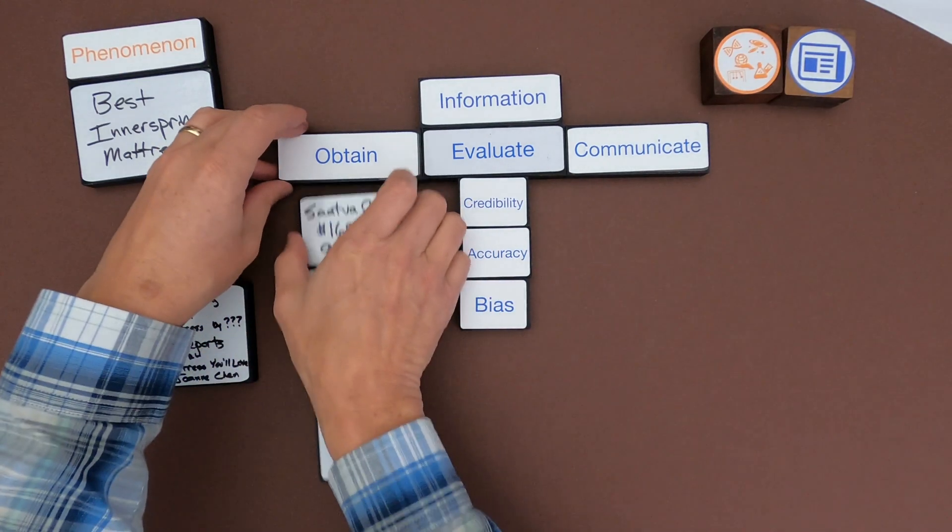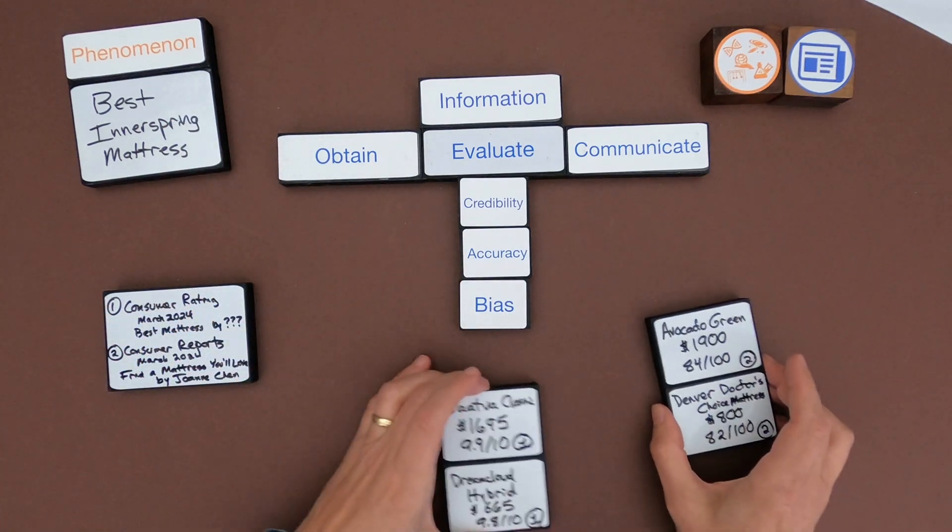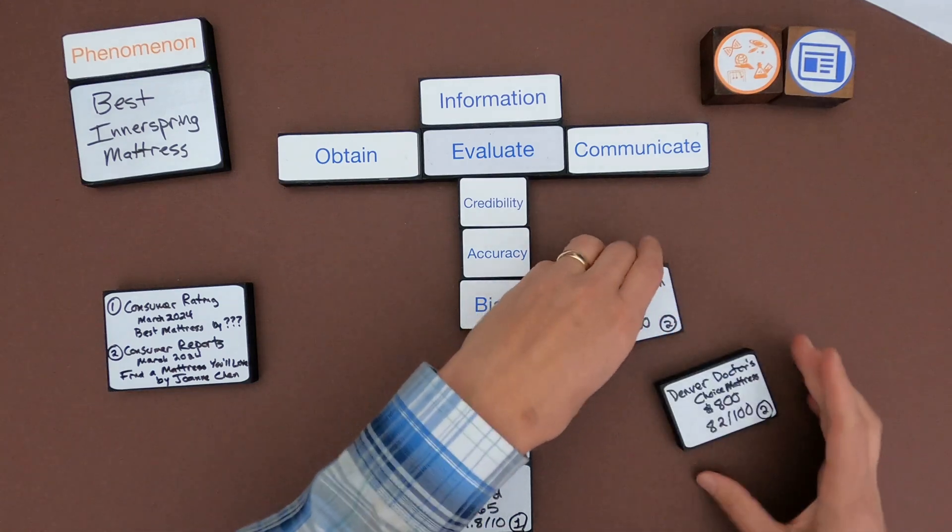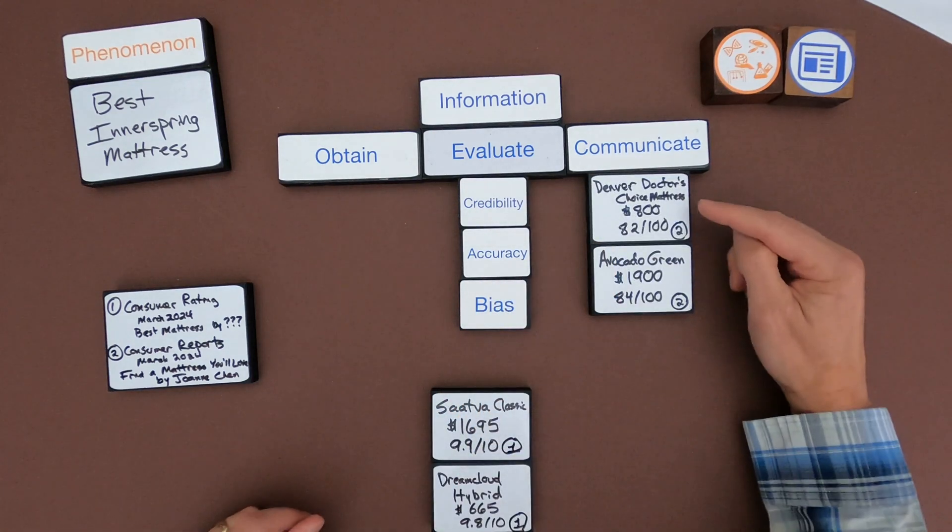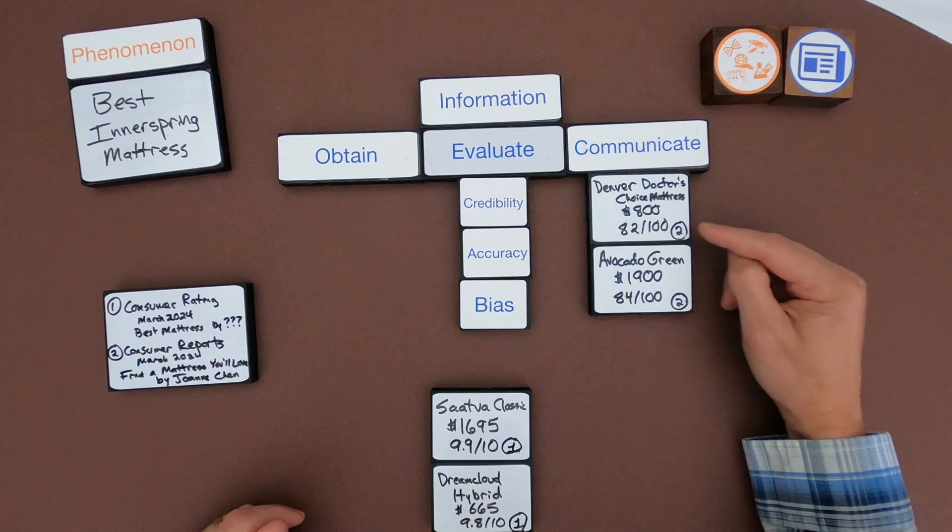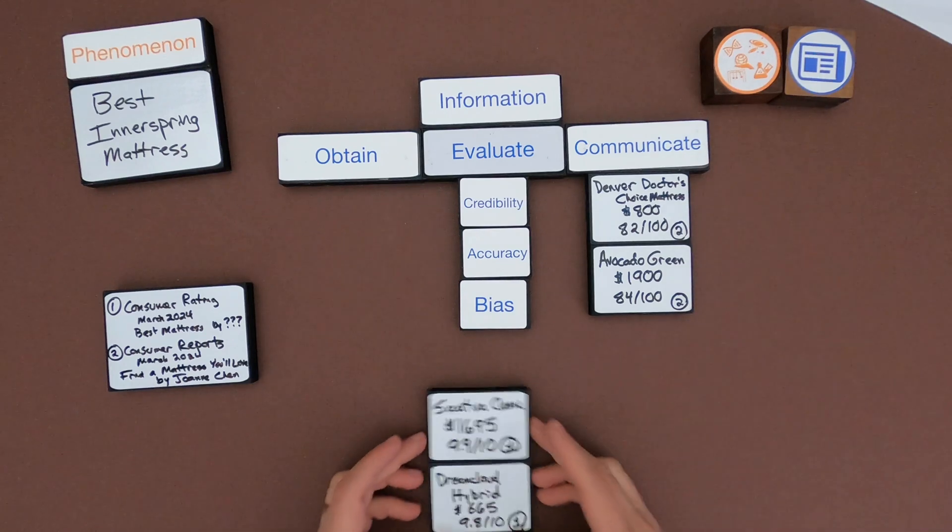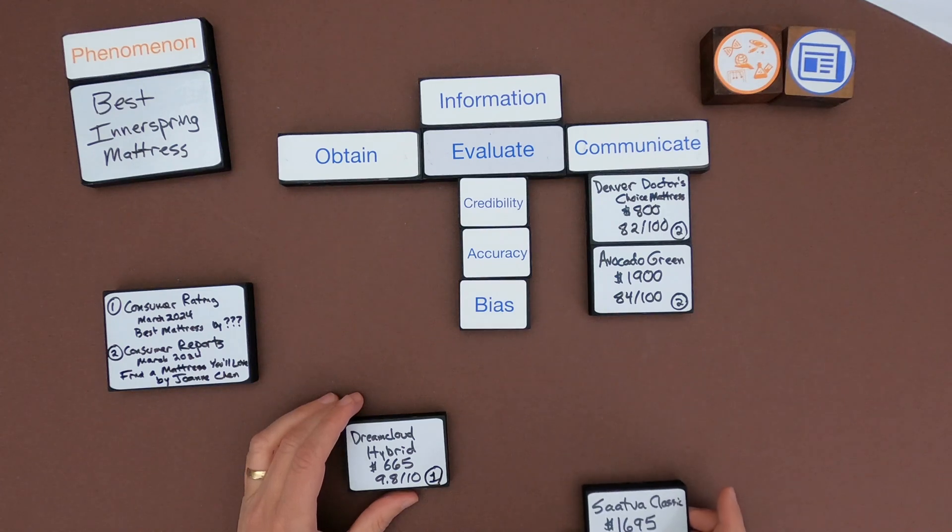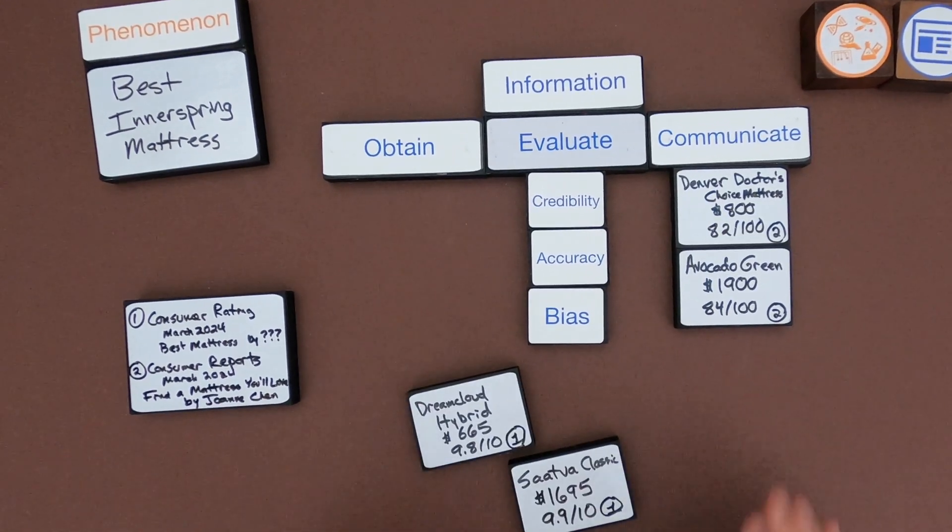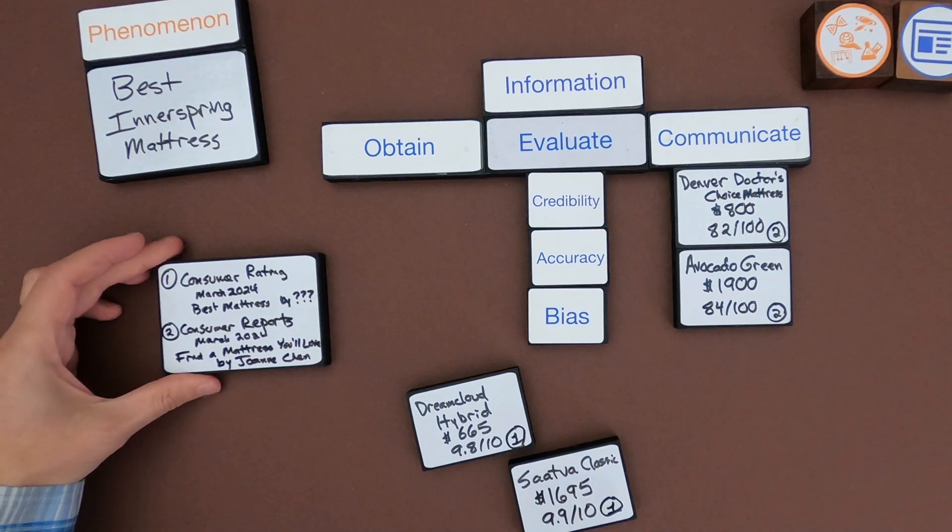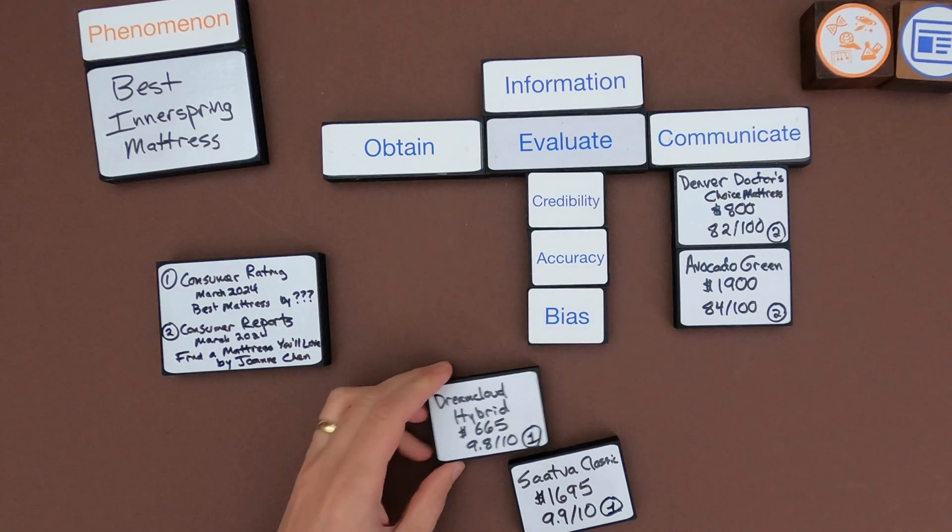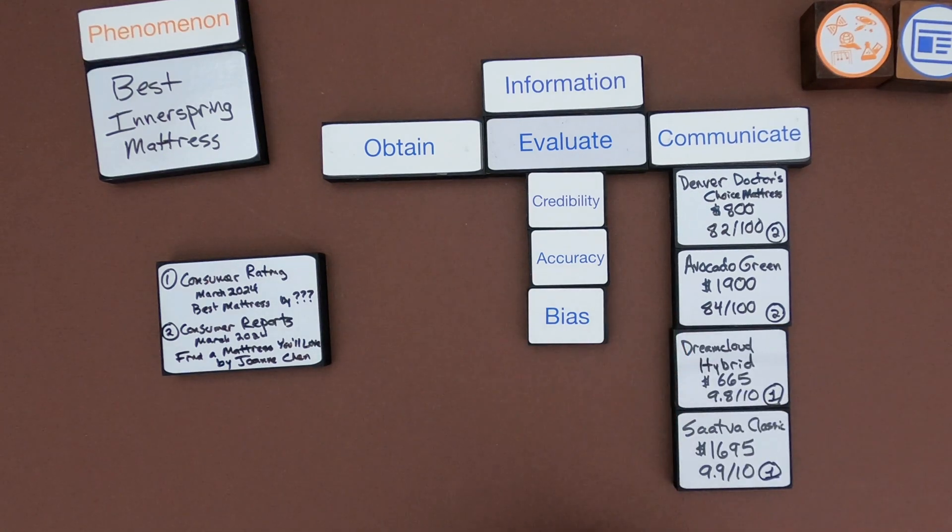And so if I were to put these now in order, man, I sure wouldn't include these really high because I don't know if they're good or not. I would probably buy the Denver mattress because it's like less than half the price and it has a really high score. What's interesting, when you look at the Consumer Reports, they rated this Saatva really one of their lowest mattresses that you have. And so what are you doing when you're really integrating information? You're taking information from multiple sources, but you're running it through this evaluation phase where you're looking for the credibility, the accuracy, and then the possible bias.